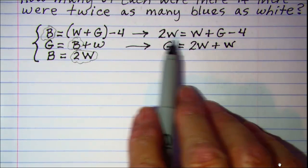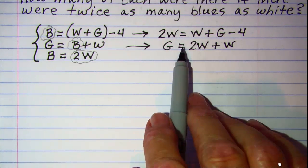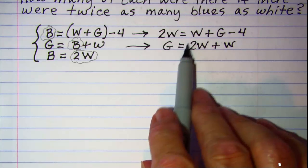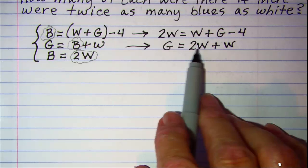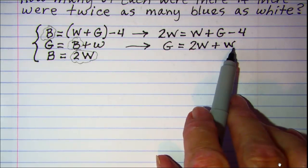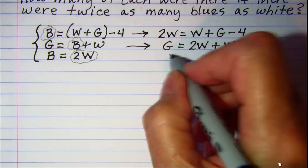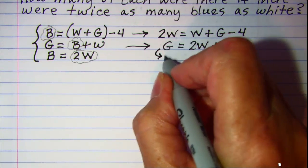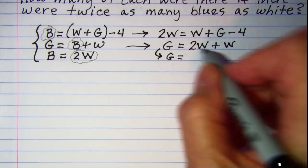Now I'm down to two equations with two variables. I see that I have another substitution opportunity right here. G is equal to 2W plus W. So let's simplify this first. This is G is equal to 2W plus W is 3W.